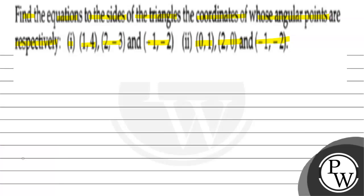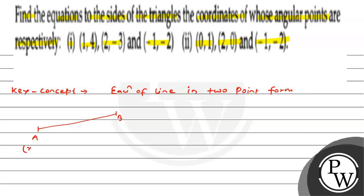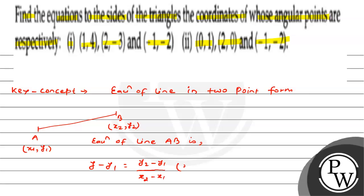What is the key concept here? The key concept is equation of line through 2 points. If we have two points A and B with coordinates (x1, y1) and (x2, y2), the equation of line AB is: y minus y1 equals (y2 minus y1) divided by (x2 minus x1) into (x minus x1).